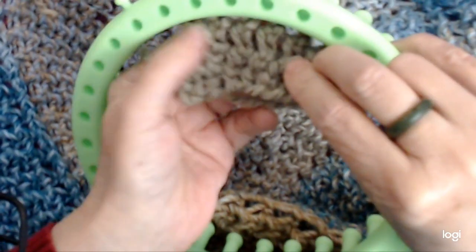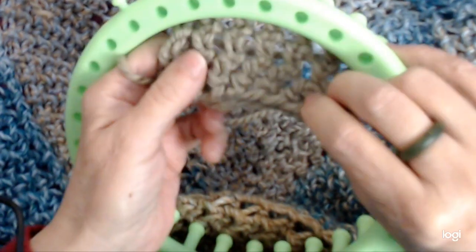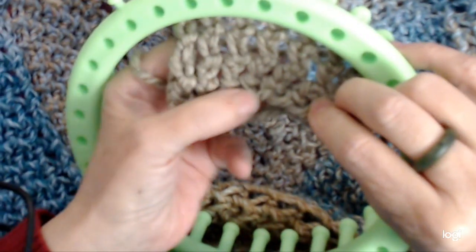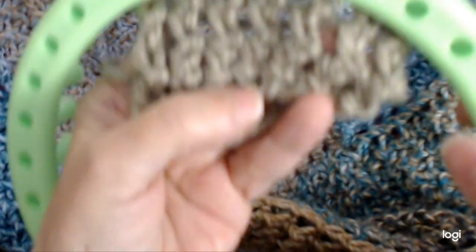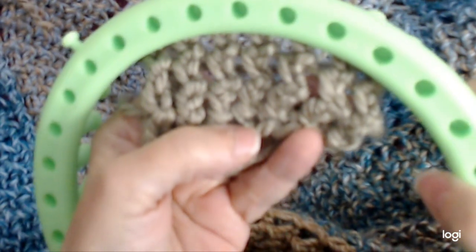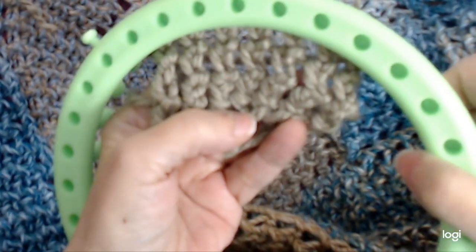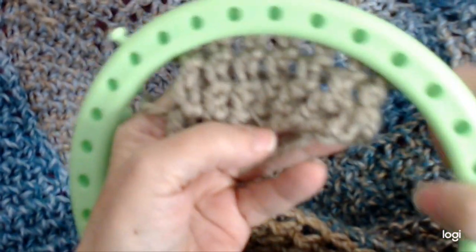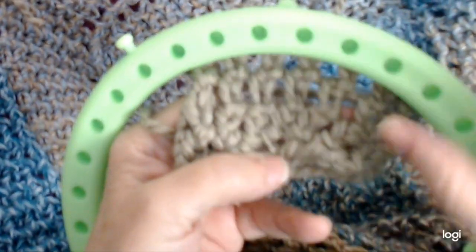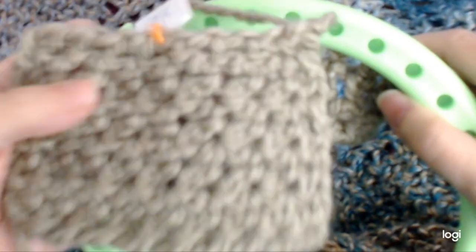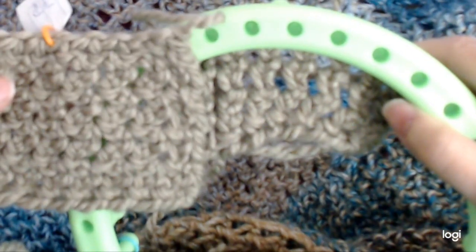It'll be tighter when it's off the loom because it's being stretched tight, but as you can see, this is what these stitches look like. I'll put it closer so you can see. You can see it's quite a different stitch, and I compare it again - very, very different.